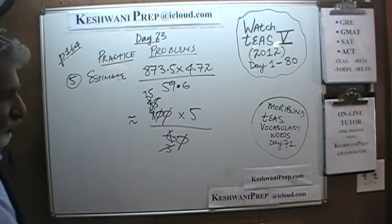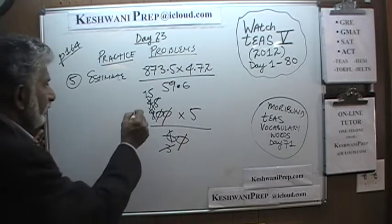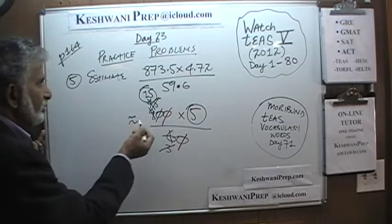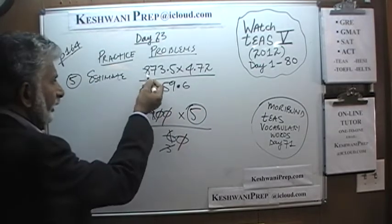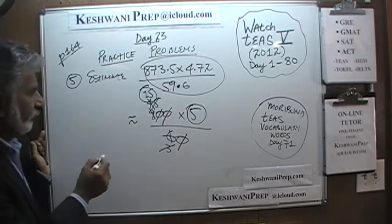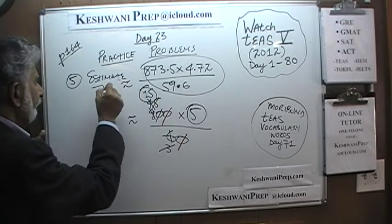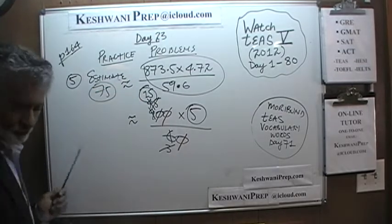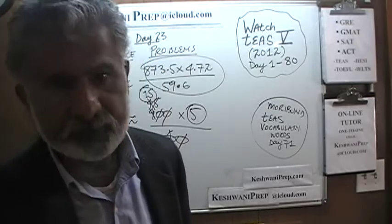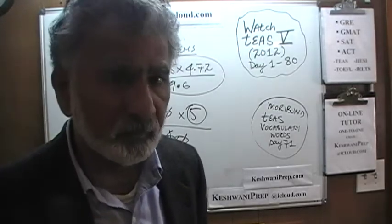Very good, we are done. So the final answer is 15 times 5, which means this quantity, when we estimate it, is approximately 75. The approximate value of this quantity is 75. So that was problem number 5.